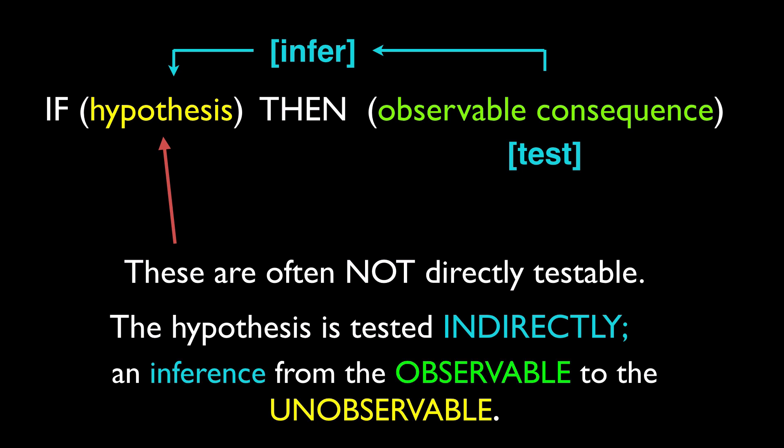Now, claims about the causes of past events are a type of scientific hypothesis. And in principle, they're just as open to confirmation and falsification as any other hypothesis. And scientists routinely test hypotheses like this every day, all around the world. They're a perfectly common and accepted part of scientific practice.